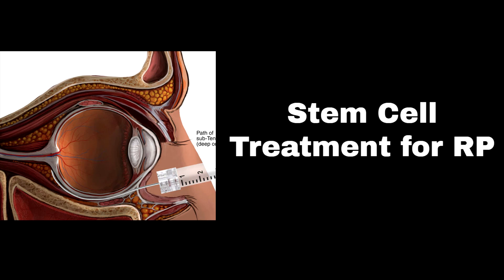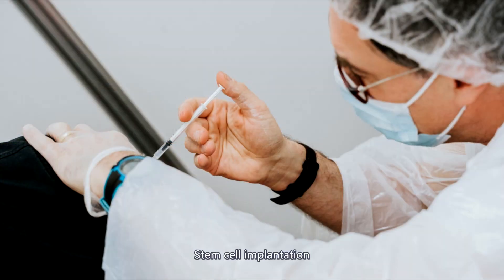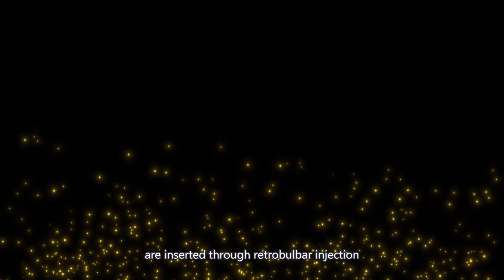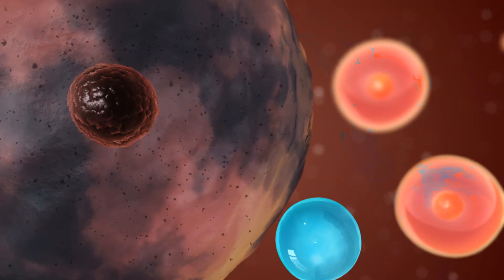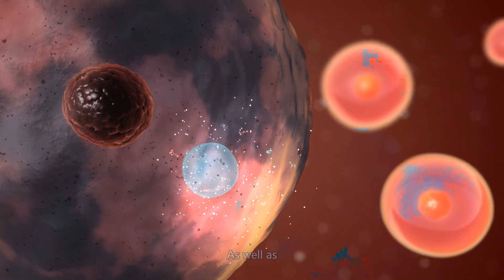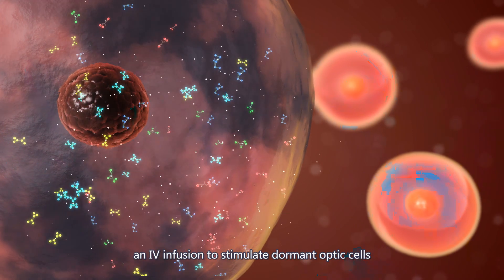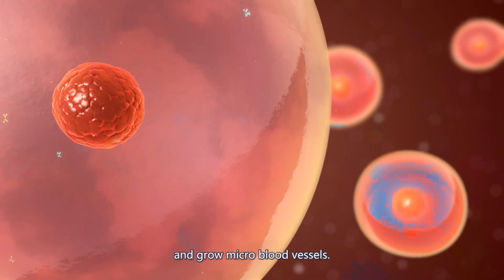Stem cell treatment for RP uses stem cell implantation. Millions of MSC stem cells from the umbilical cord are inserted through retrobulbar injection as well as IV infusion to stimulate dormant optic cells and grow micro blood vessels.